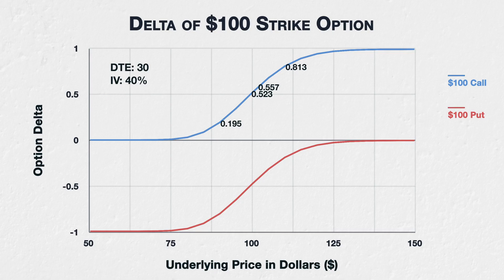Delta is increasing or decreasing at varying rates. If we take a point on the chart, say at $90, and take a tangent from the delta line, this gives us the current rate of change of delta. This is essentially what gamma is — it's telling us how fast delta is changing. The steeper the tangent line, the faster delta changes based on a change in the underlying price, and therefore the higher the gamma.